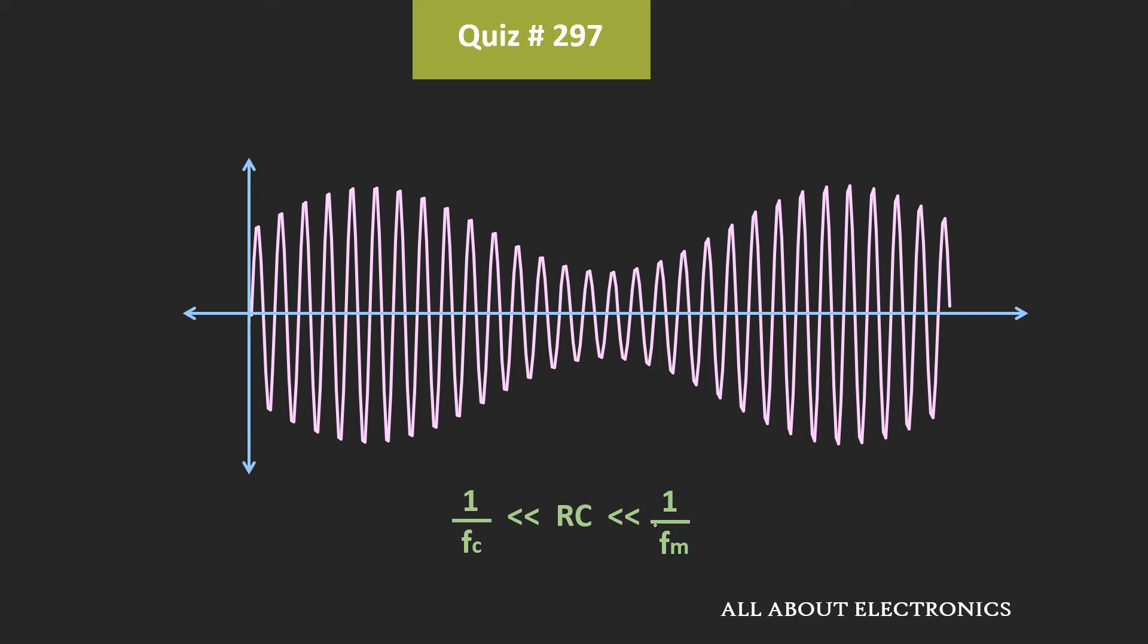So if this RC time constant is too small, then we will see more ripple in the output. On the other end, if this RC time constant is too large, then the capacitor won't be able to follow this envelope. And in this case, we will see this diagonal clipping.